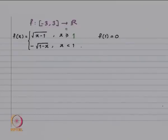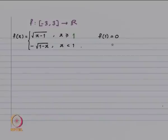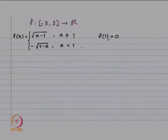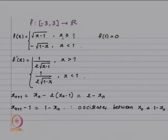Let us look at an example where the iterates may not converge. Consider f defined on [−3, 3] where f(x) = √(x−1) for x ≥ 1 and f(x) = −√(1−x) for x < 1. One can see that f(1) = 0 and that is the unique zero. The derivative is f'(x) = 1/(2√(x−1)) for x > 1 and 1/(2√(1−x)) for x < 1, so f is differentiable on [−3, 3] except at the point 1.